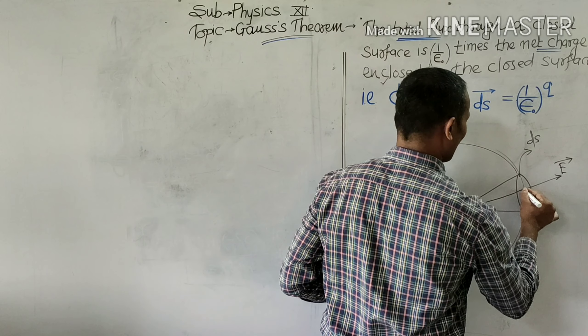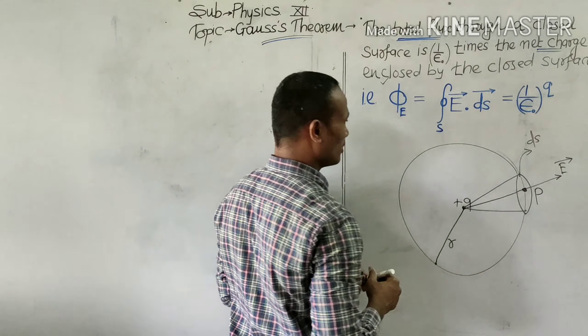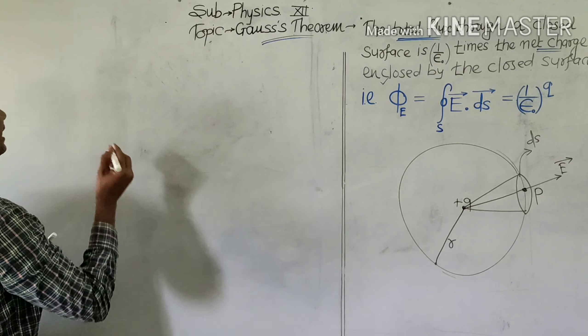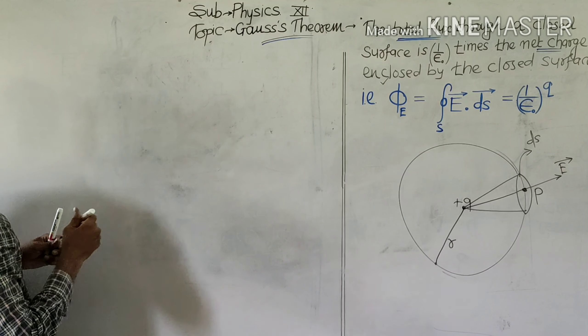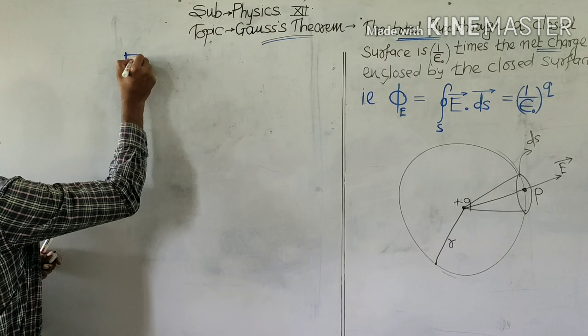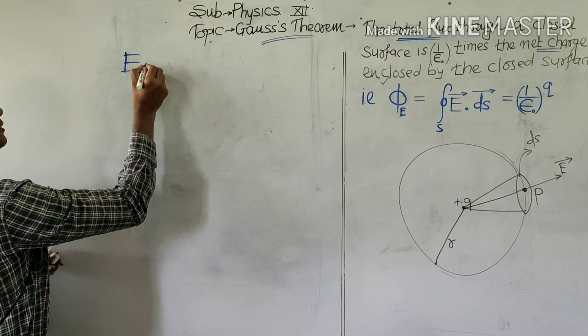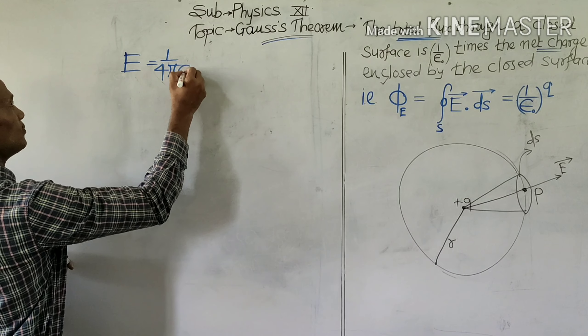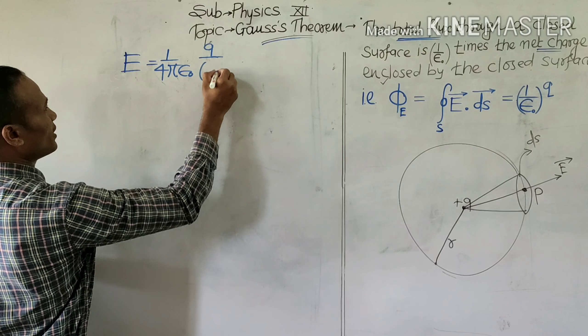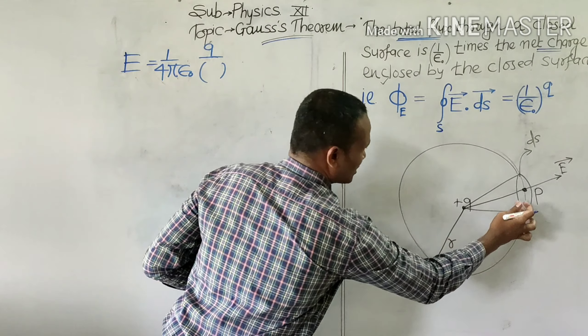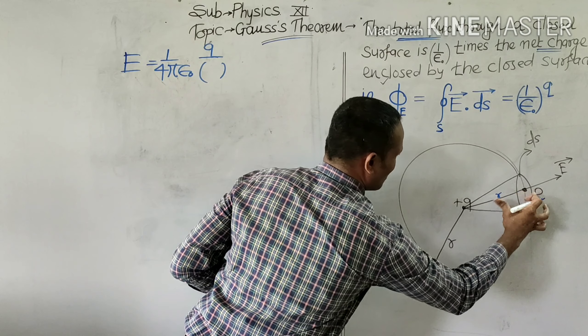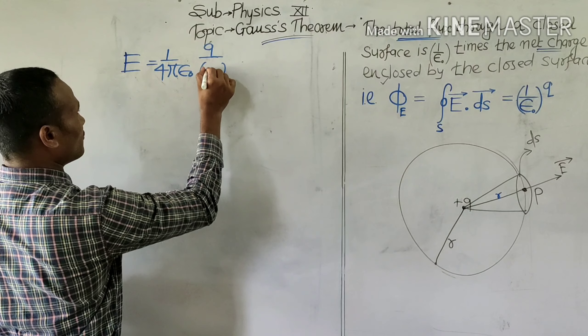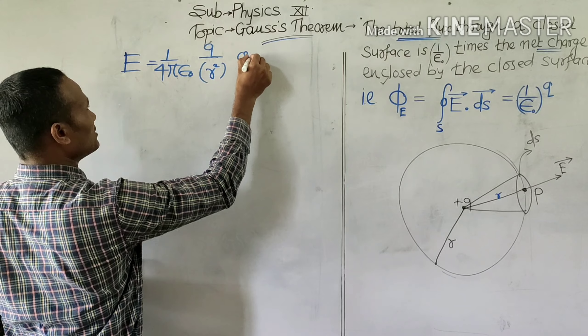Now, let us say this is a point P. For the electric field at point P, the electric field at point P is 1 upon 4πε₀ times the charge upon square of the distance. The distance is R, square of the distance therefore R², and its direction is outward.